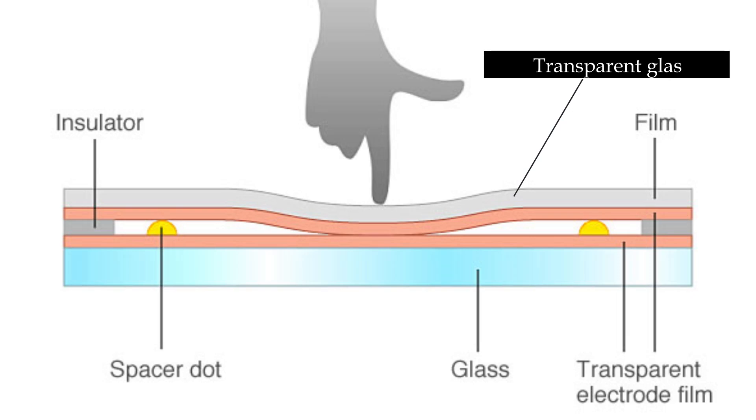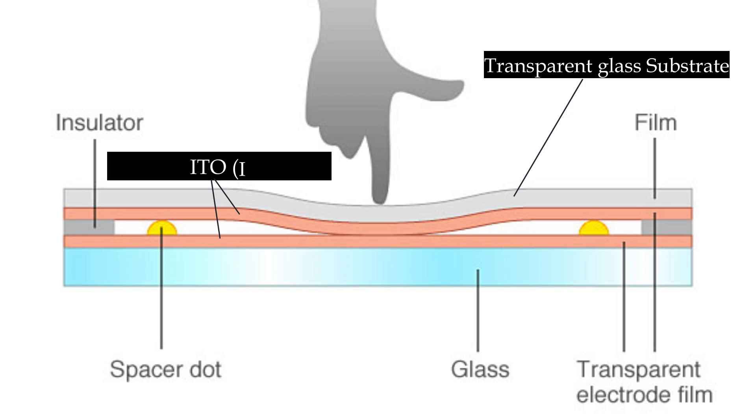Resistive technology was implemented in the early age, from the year 1990 to 2010 — that was the time for resistive touchscreens. You must have seen Chinese smartphones having resistive touch panels. These touch panels have a glass substrate on the top, and beneath that there are two different layers separated by a conductor — Indium Tin Oxide, ITO — a transparent thin film.